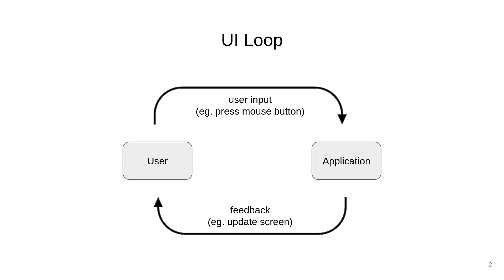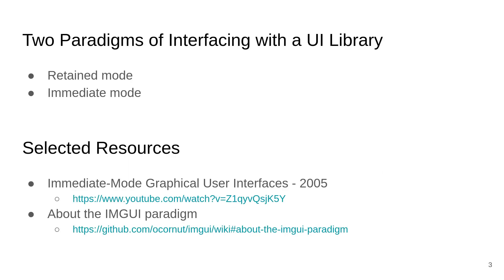This interaction happens in a loop: the user provides input like pressing a mouse button, the application receives that input and provides feedback such as updating the screen. Broadly, there are two paradigms of interfacing with a UI library: retained mode and immediate mode.